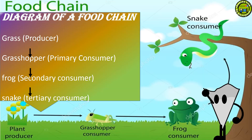Diagram of a Food Chain. This is the diagram of a Food Chain. Look at this — this is a plant. The plant gets eaten by the grasshopper. The grasshopper gets eaten by the frog. The frog gets eaten by the snake.